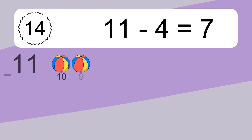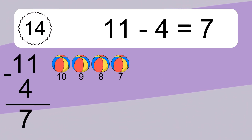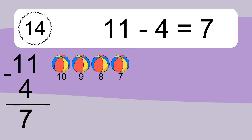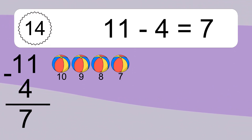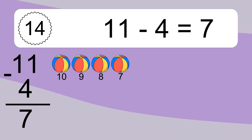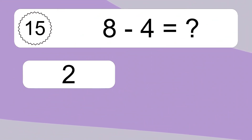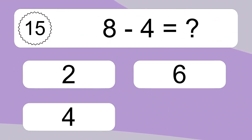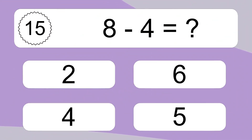11 minus 4 equals what? 11 minus 4 equals 7. Let's count it: 10, 9, 8, 7.